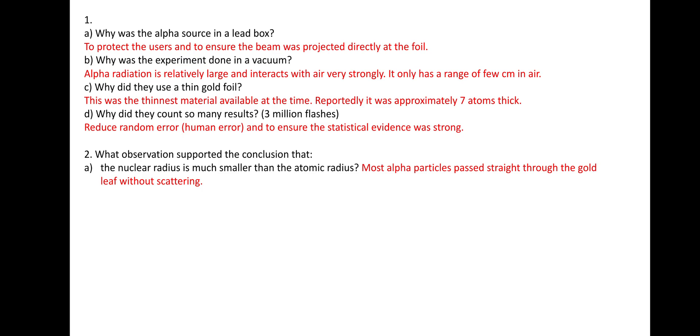So number 2A. What observations support the conclusion that the nuclear radius is much smaller than the atomic radius? And that's simply that most alpha particles pass straight through the gold leaf without scattering. Or with some slight deviation.